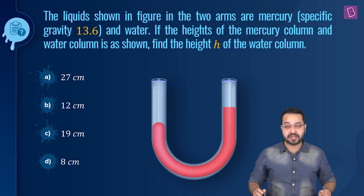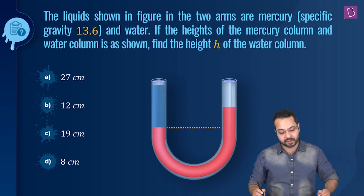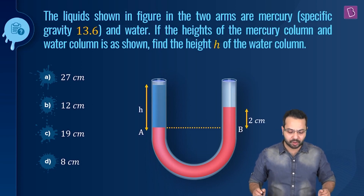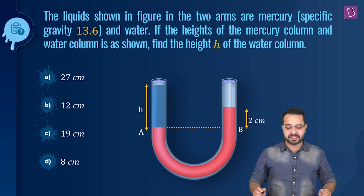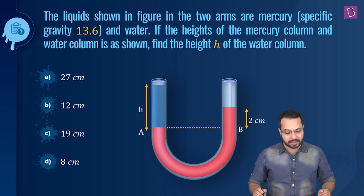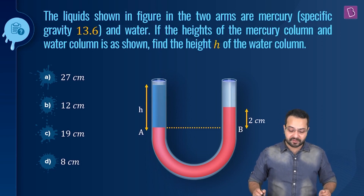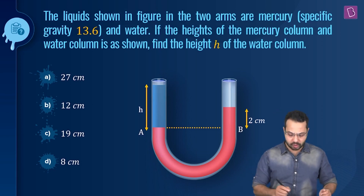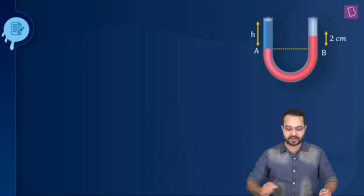The liquid shown in the figure in the two arms are mercury, which has a specific gravity of 13.6, and water. If the heights of the mercury column and water column are as shown, find the height h of the water column.